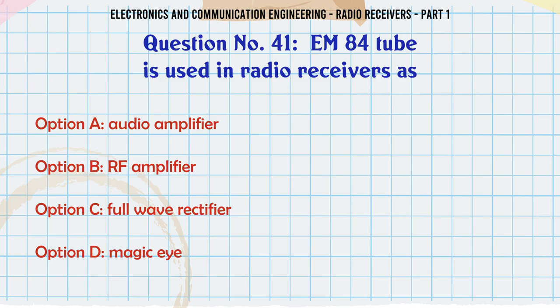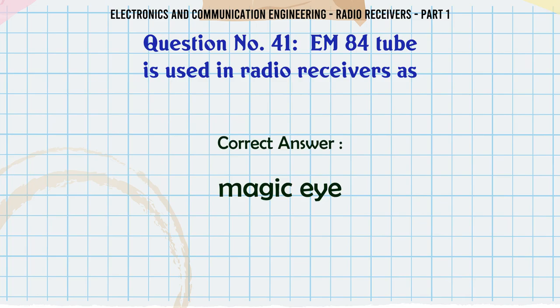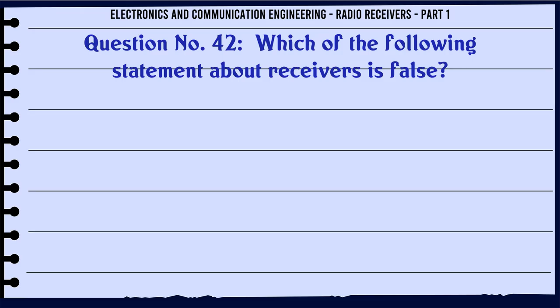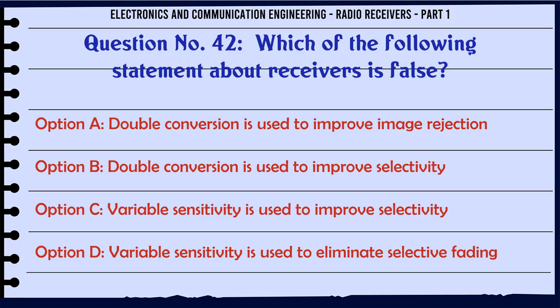EAM 84 tube is used in radio receivers as: A. Audio amplifier. B. IF amplifier. C. Full wave rectifier. D. Magic eye. The correct answer is magic eye.